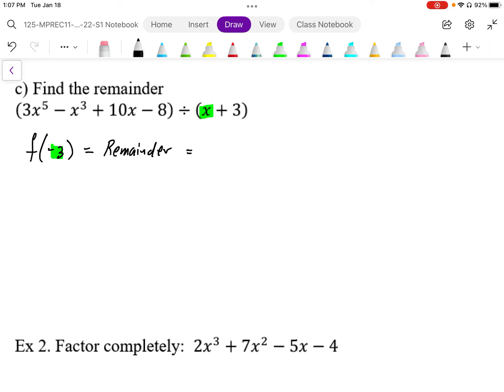So when I plug negative 3 in, I get 3 times negative 3 to the power of 5 minus negative 3 cubed plus 10 times negative 3 minus 8. And I'm just going to work that out.